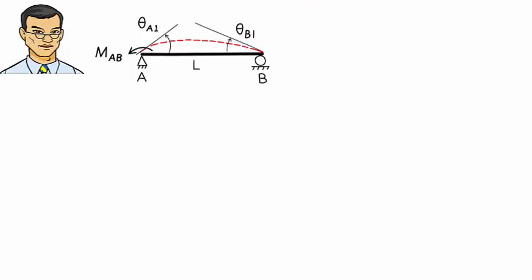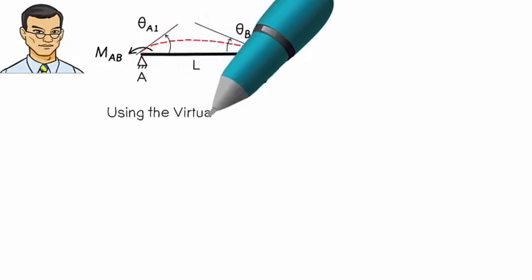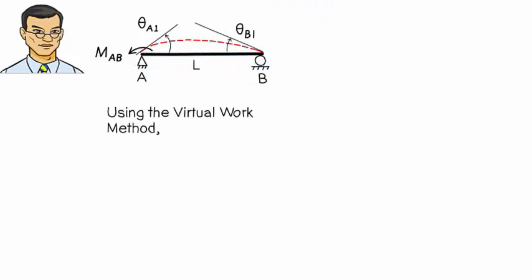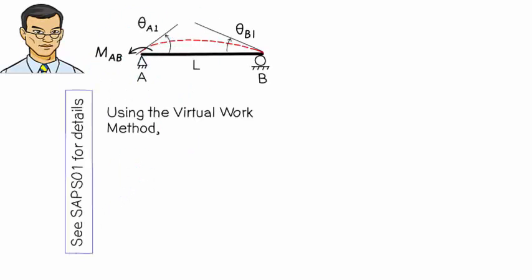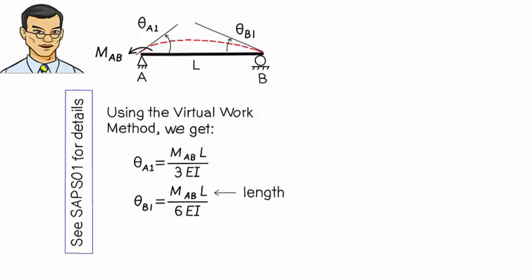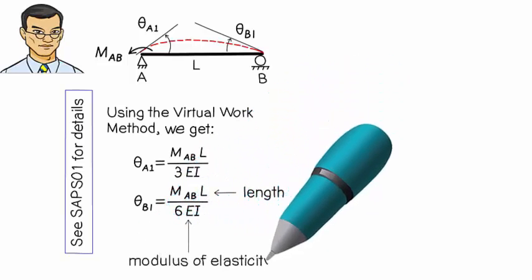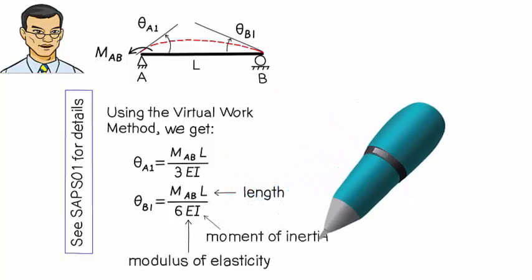Let's refer to the rotation at A as theta A1 and call the rotation at B theta B1. We can easily determine these joint rotations in terms of MAB using the virtual work method. The step-by-step details of these computations are presented elsewhere. Here, I am going to give the results only. Theta A1 equals MAB L over 3EI and theta B1 equals MAB L over 6EI, where L is the beam's length, E is modulus of elasticity of the material, and I is the beam's moment of inertia about the axis of bending.